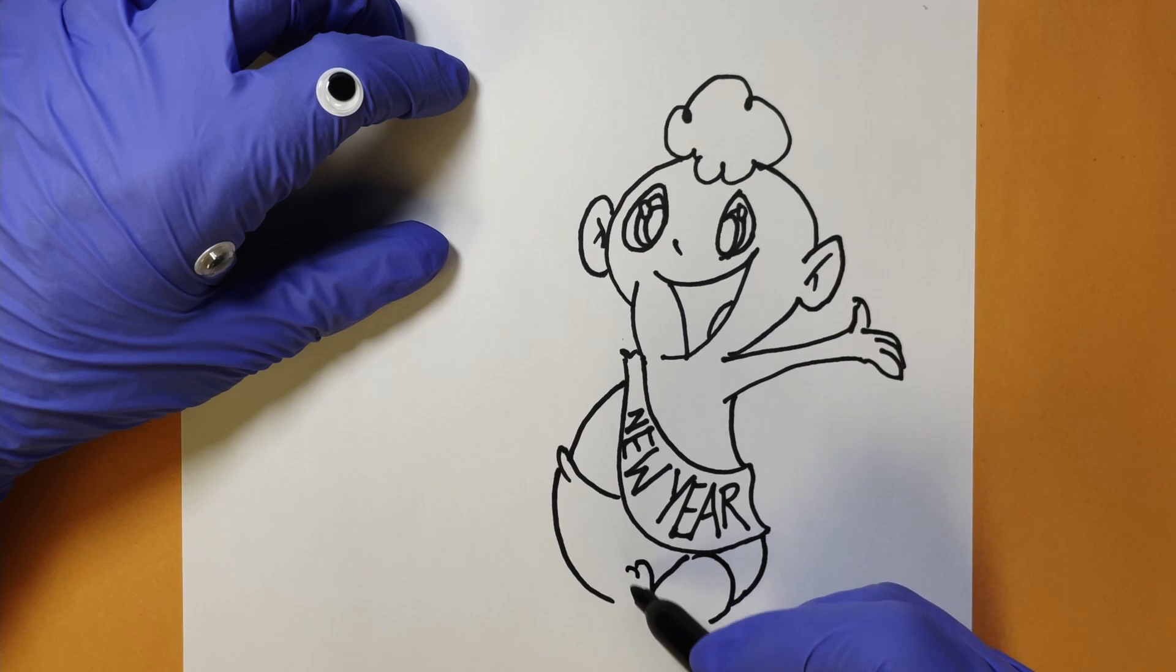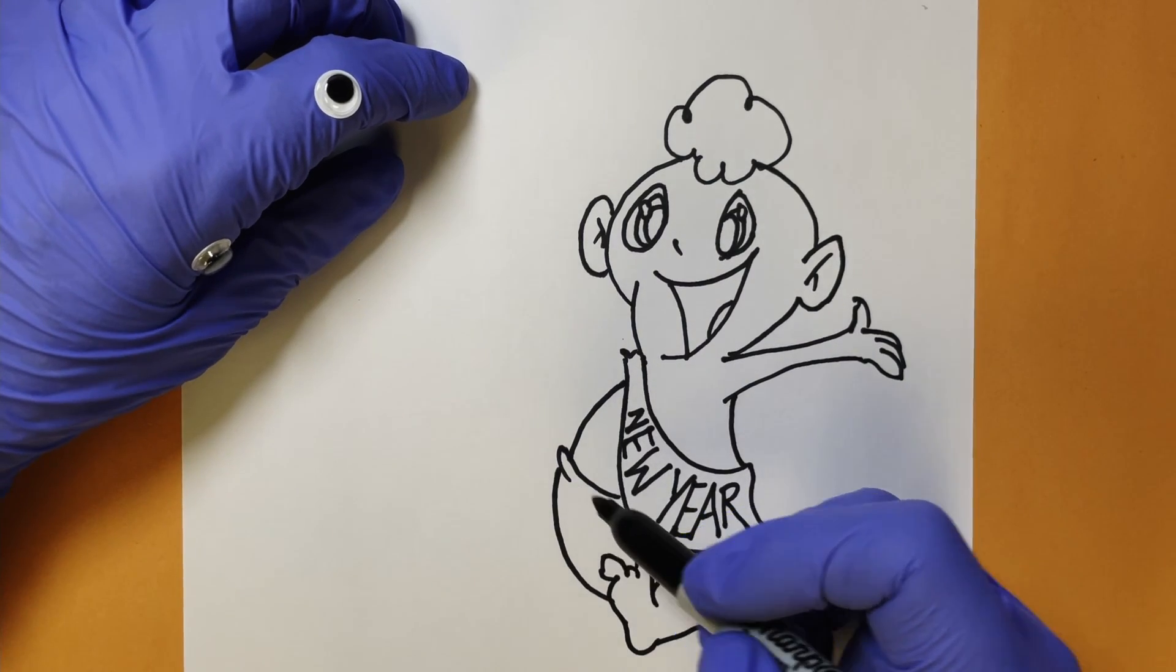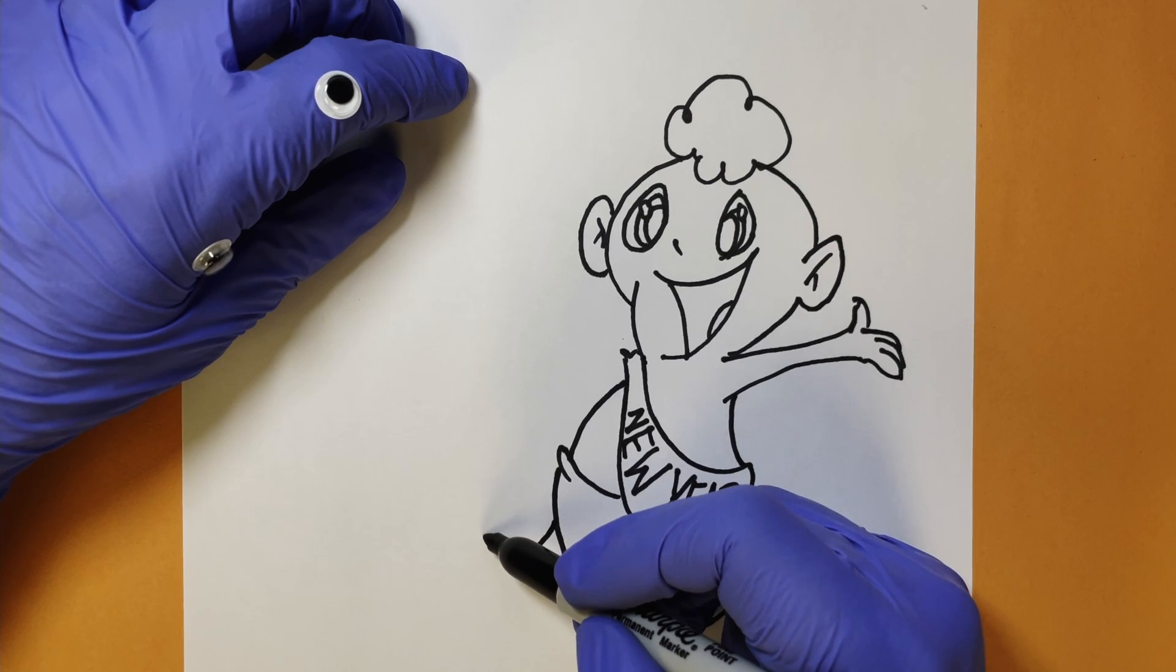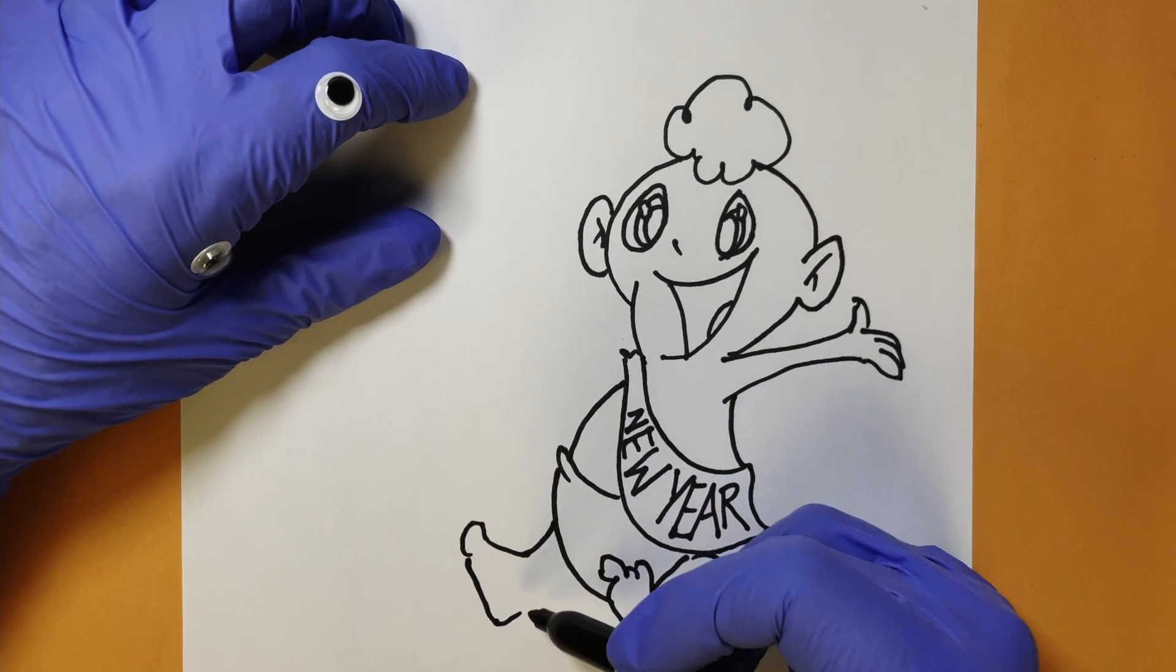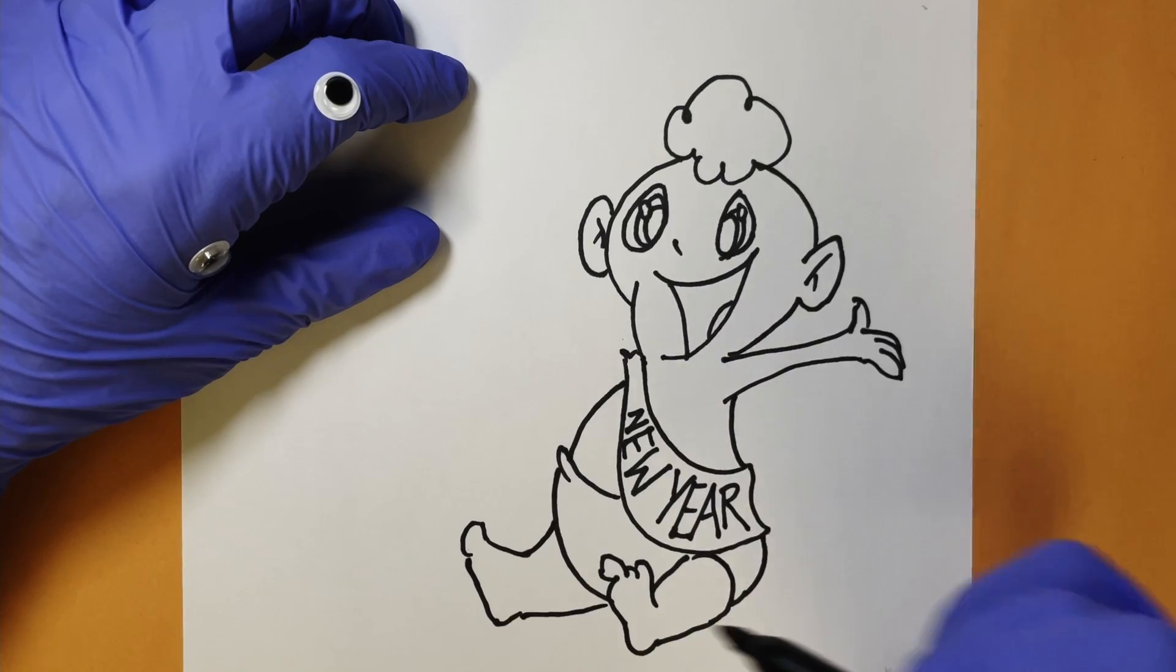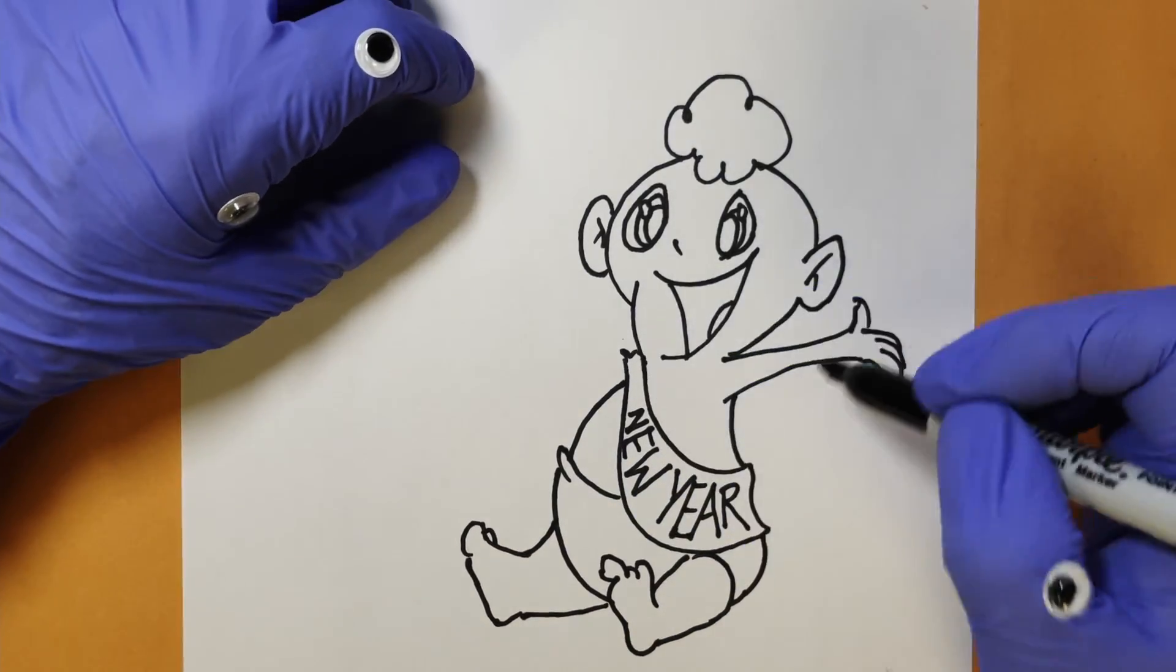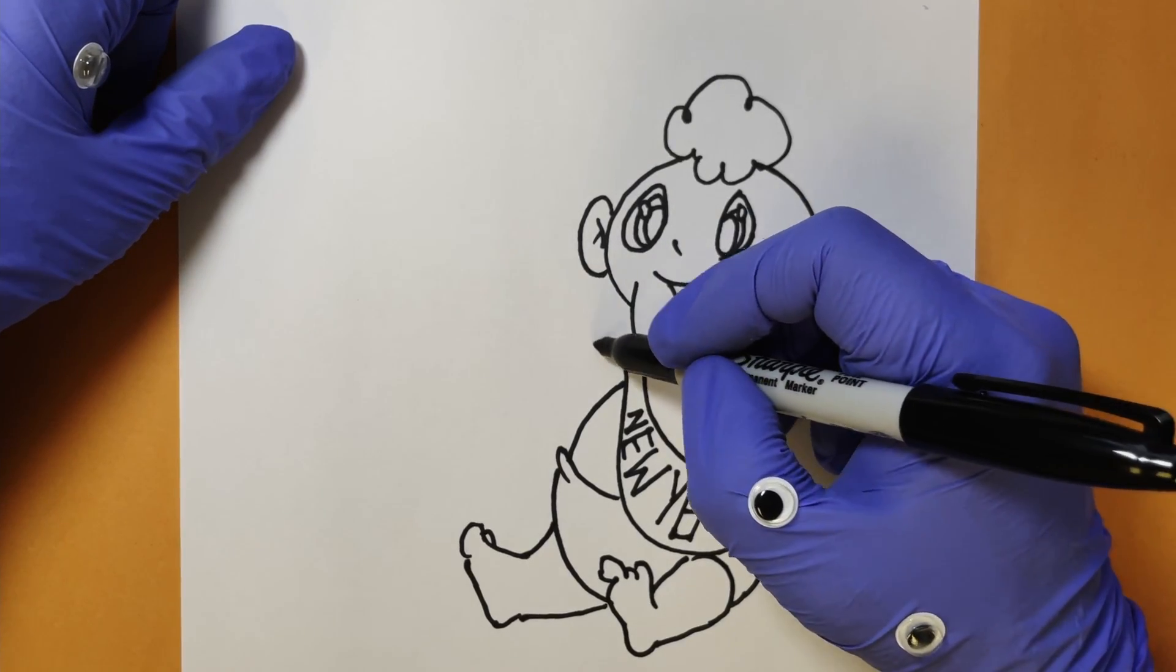Give him some fun feet just like that, give him a couple toes. This is fun everyone. Another leg out here like this, little toe, bring his foot down like that and over. There's another toe just for fun.